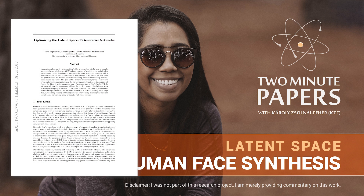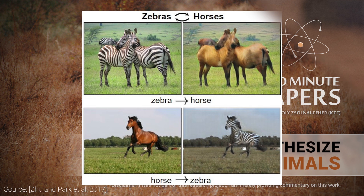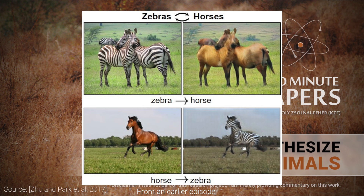Dear Fellow Scholars, this is Two Minute Papers with Károly Zsolnai-Fehér. In many previous episodes, we talked about generative adversarial networks, a recent new line in machine learning research with some absolutely fantastic results in a variety of areas.